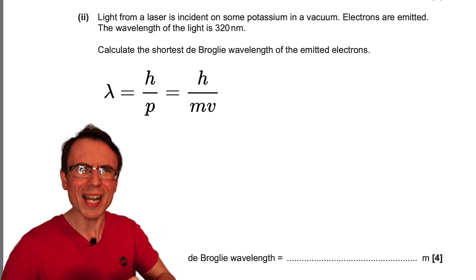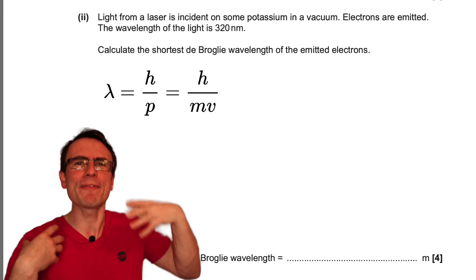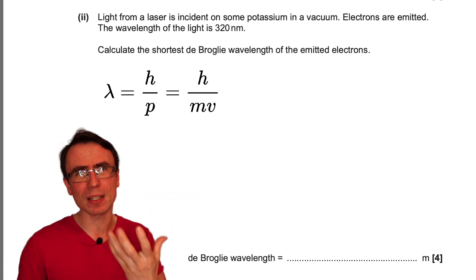So to work out lambda we really need the velocity or the momentum of those electrons. We can work this out directly from the kinetic energy using Einstein's equation.